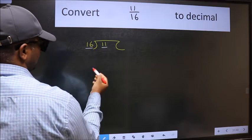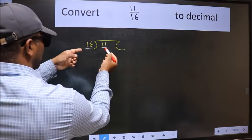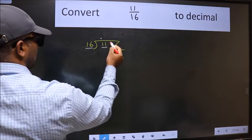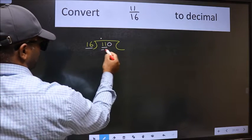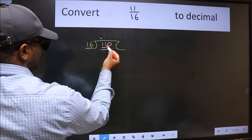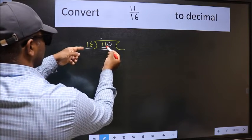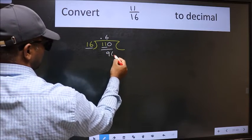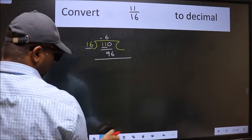11 is smaller than 16, so we should put a decimal point and take 0, making 110. A number close to 110 in the 16 table is 16×6=96. Now we subtract and get 14.